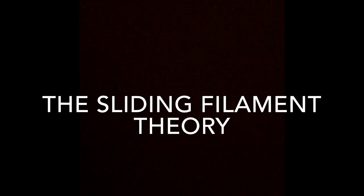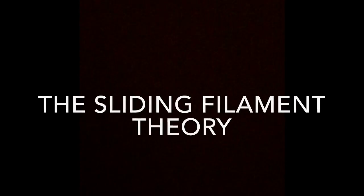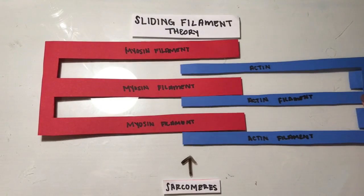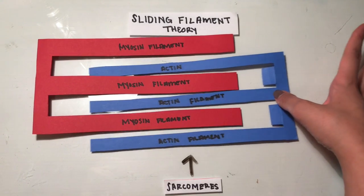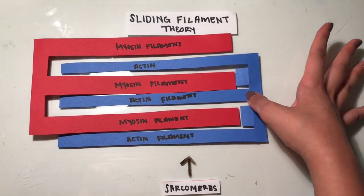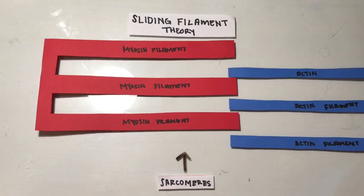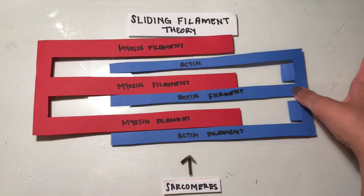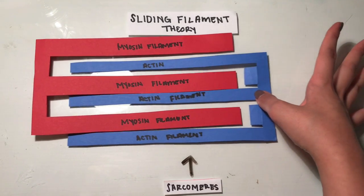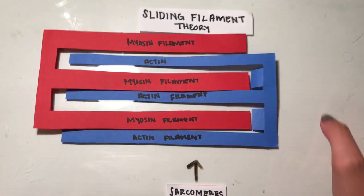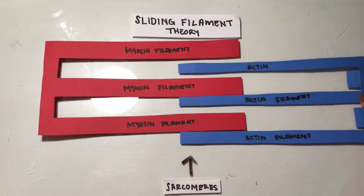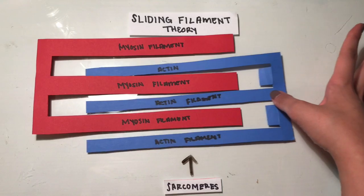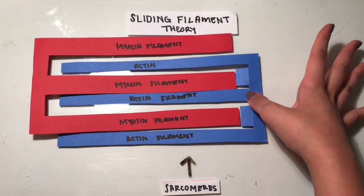Our daily actions are committed when our skeletal muscles contract. The sarcomeres contain many parallel overlapping thin actin and thick myosin filaments. The muscles contract when these filaments slide past each other, resulting in a shortened sarcomere as well as the muscle. This is known as the sliding filament theory.